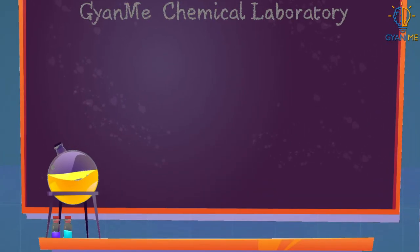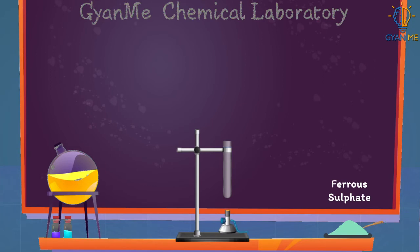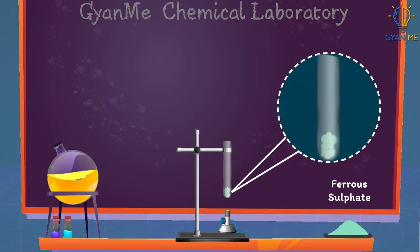Let us do an activity to understand decomposition reaction. Take about two grams of ferrous sulphate crystals in a dry boiling tube. Note the color of the ferrous sulphate crystals. They are green in color.